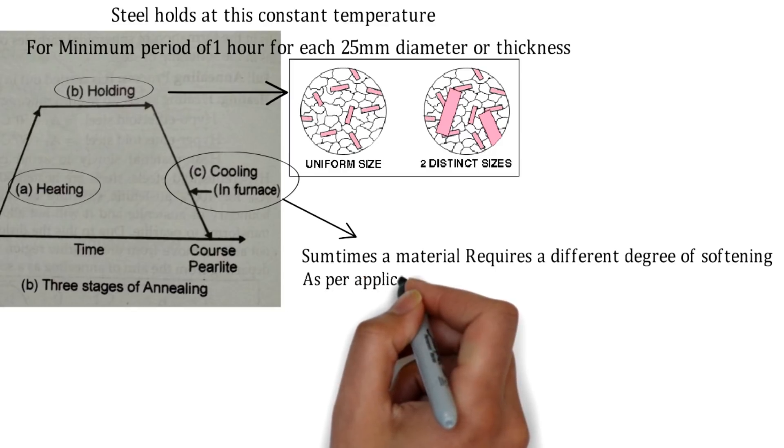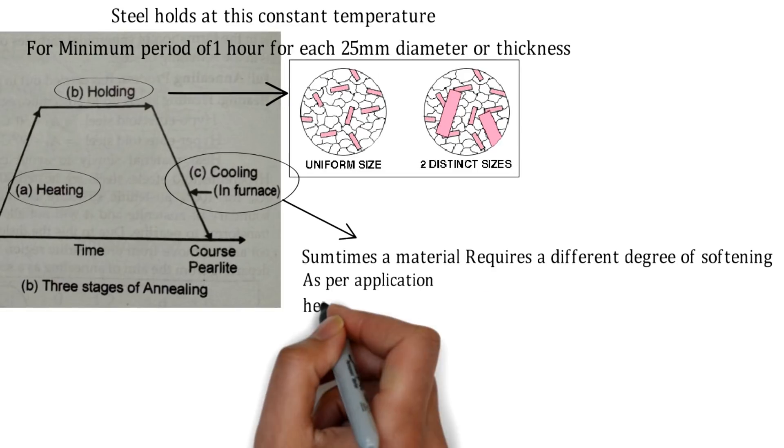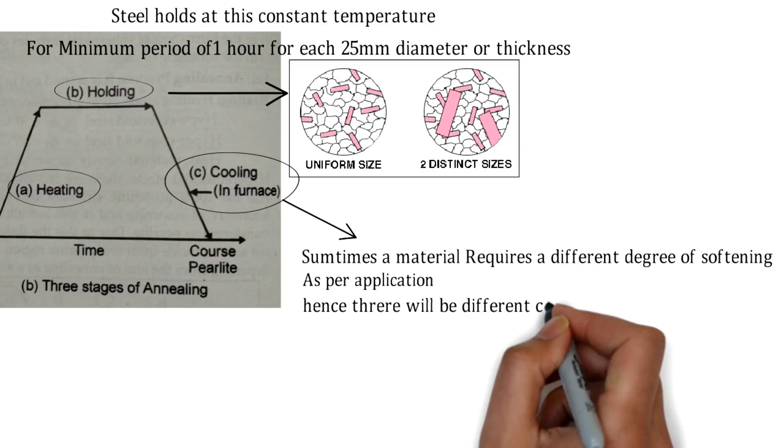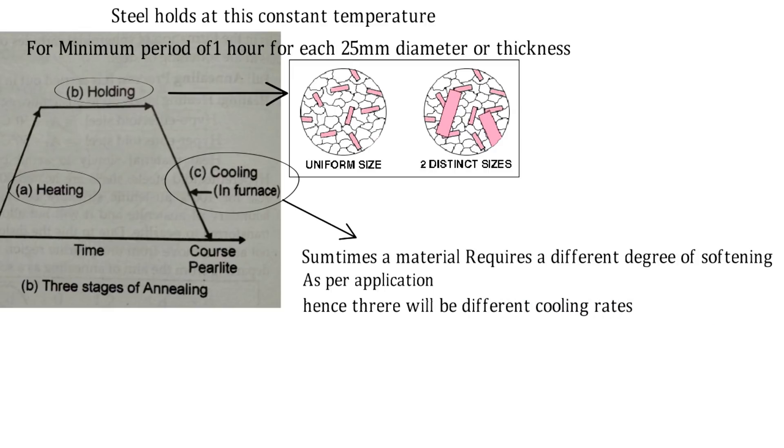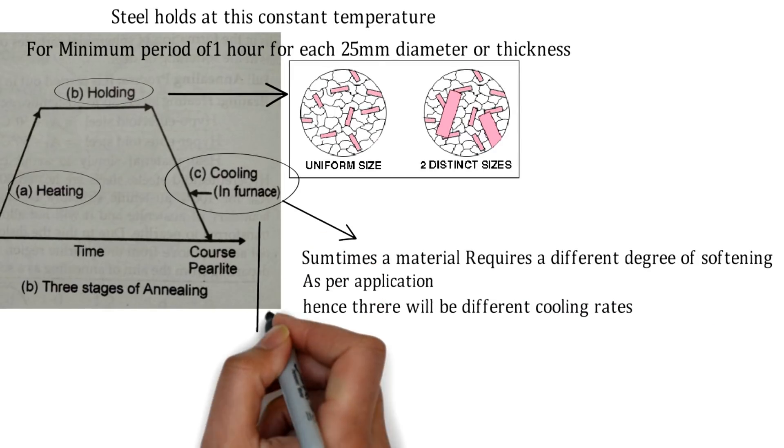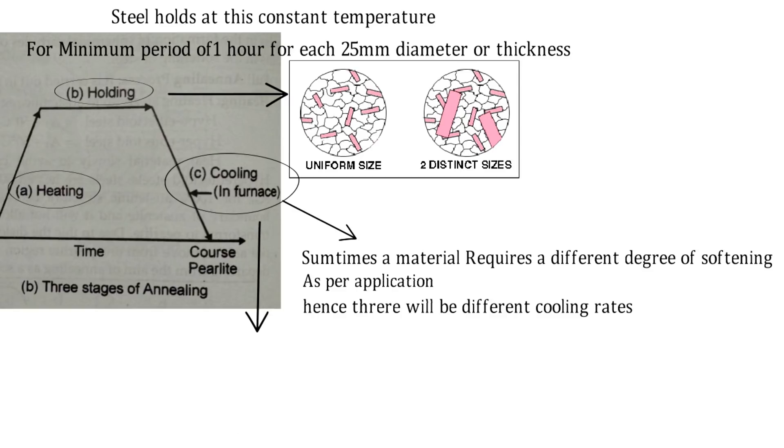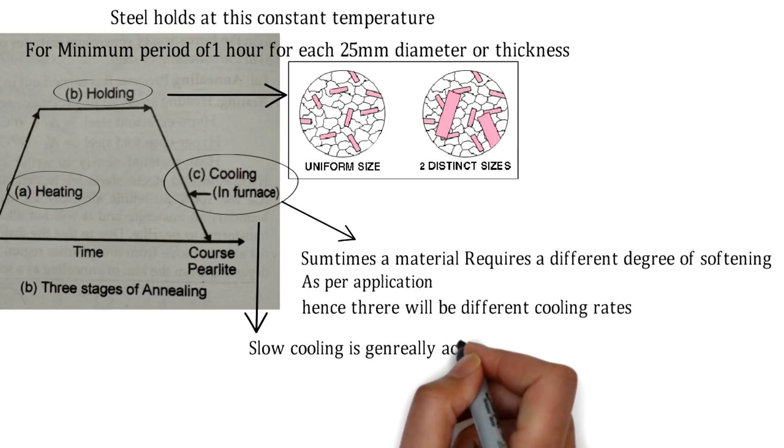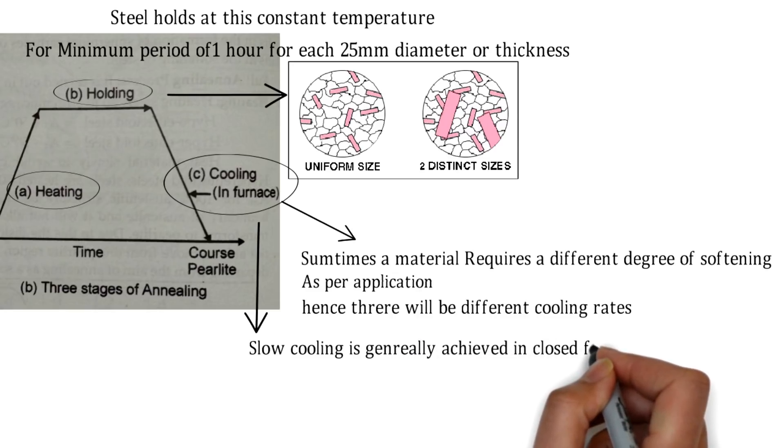To achieve that different degree of softening, there will be a different degree of cooling rate required. The cooling in this particular process, the slow cooling is carried out, is generally achieved...